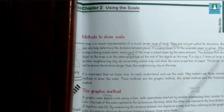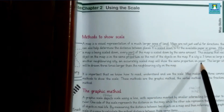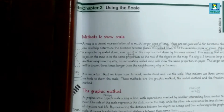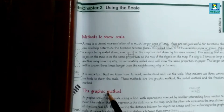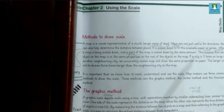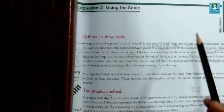For example, if a city is three times as large as a neighboring city, an accurately scaled map will show the same proportion. If Lahore is three times larger than Peshawar in real life, then on the map Lahore will also be drawn three times larger than Peshawar, just as it is in real life.